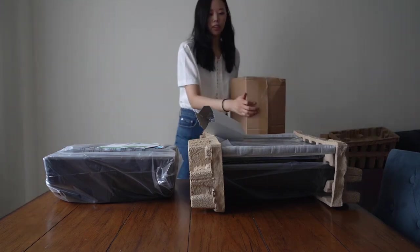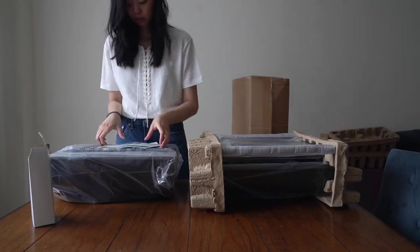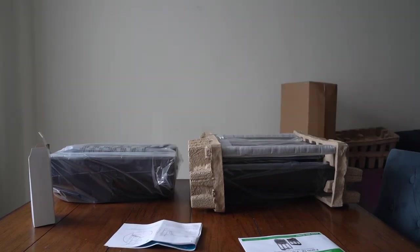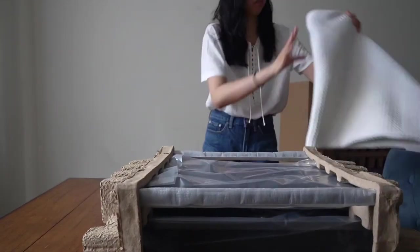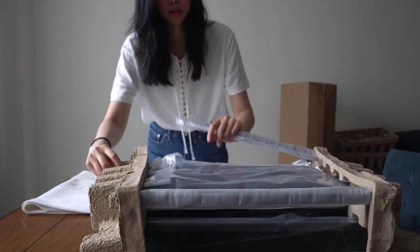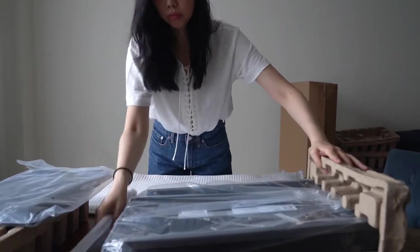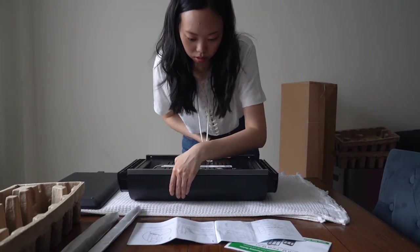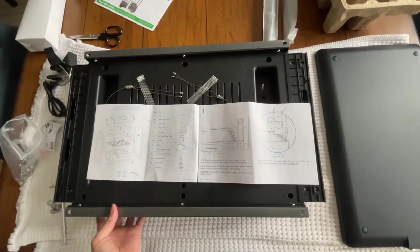First we took everything out of the box. There's essentially just a couple main pieces: the top where the LCD monitor is, the grow deck where the plants sit, the left and right metal frame pieces, and some base bars on the bottom, and then of course screws, the instruction manual, stuff like that.